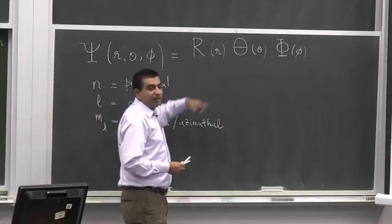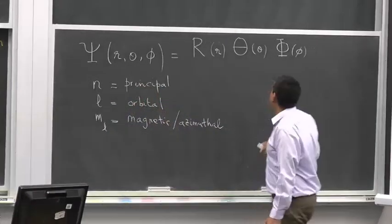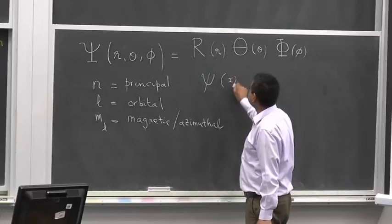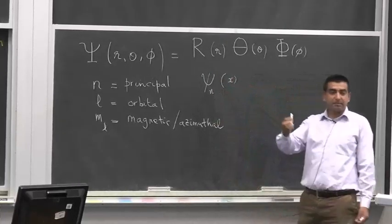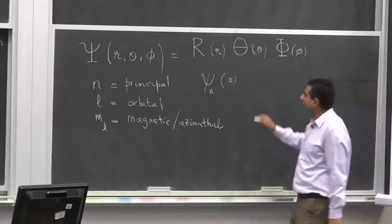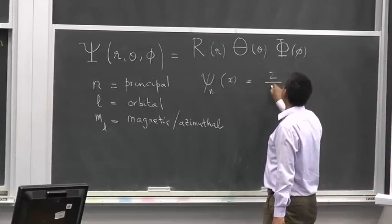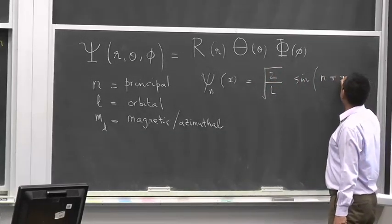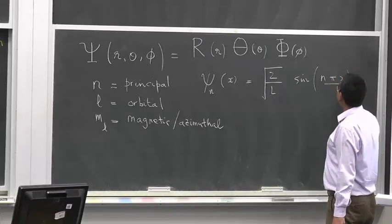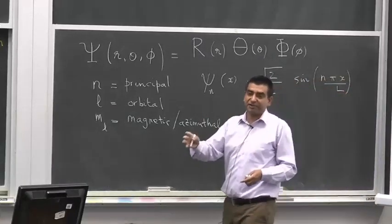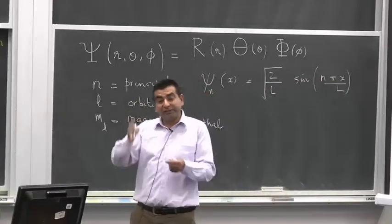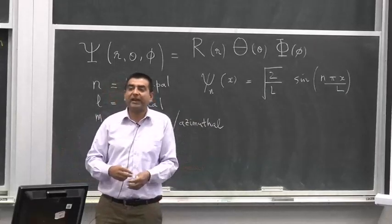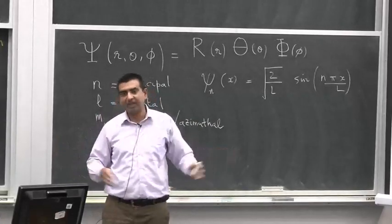Now this R — when we looked at wave functions in a 1D well, we wrote, for example, sine as a function of x. This wave function depended upon the quantum number n for the 1D well, and was given by sqrt(2/L) times sin(nπx/L). And n was constrained to be only a positive integer: 1, 2, 3, 4, and so on. These constraints on n arise from the boundary conditions — n cannot have any arbitrary value; it's quantized.